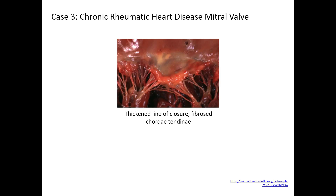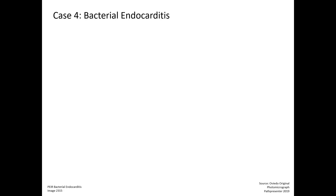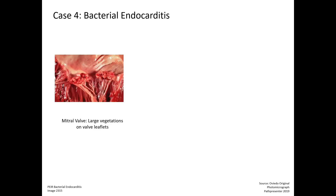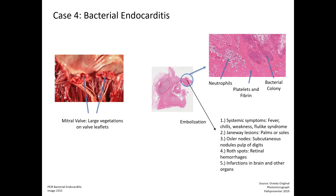Case 3 is chronic rheumatic heart disease of the mitral valve, demonstrating a thickened line of closure and fibrosed chordae tendineae. The thickened edge of the valve will affect function and will eventually result in mitral valve stenosis and/or mitral valve regurgitation. Case 4 is bacterial endocarditis. The gross photograph shows very large vegetations on the mitral valve leaflets. The histologic section demonstrates neutrophils, platelets, fibrin, and a bacterial colony. The vegetation can embolize and cause systemic symptoms, Janeway lesions, Osler nodes, Roth spots, and infarctions in the brain and other organs.